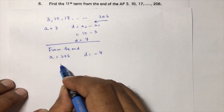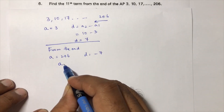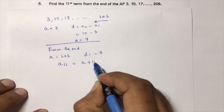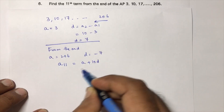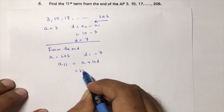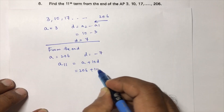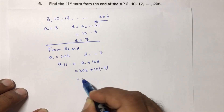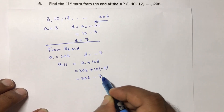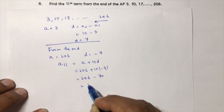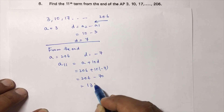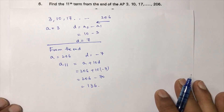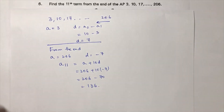The 11th term from the end is a + 10d = 206 + 10 × (−7) = 206 − 70 = 136. So the 11th term from the end is 136.